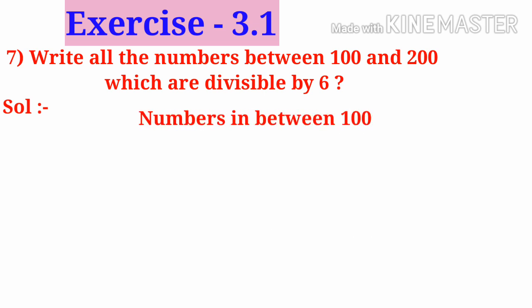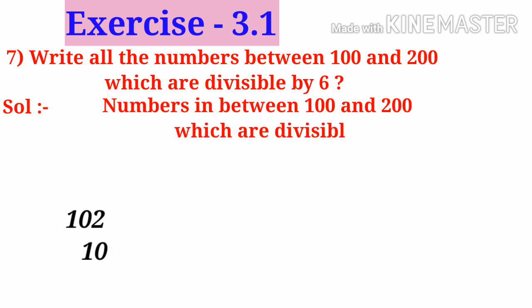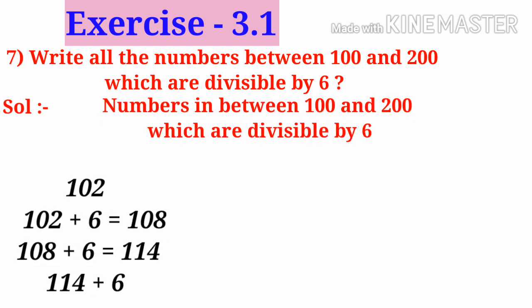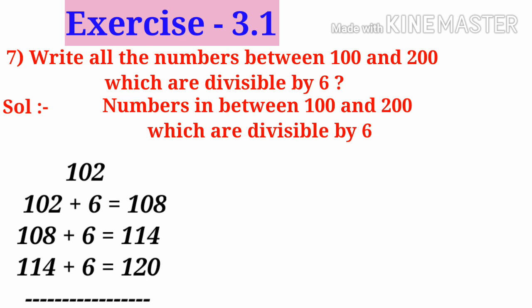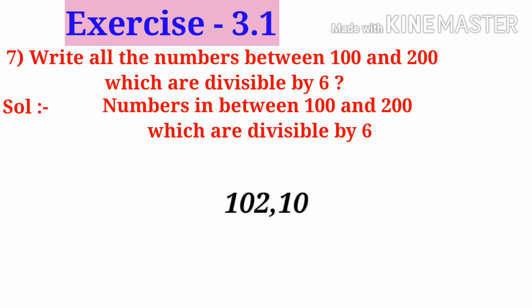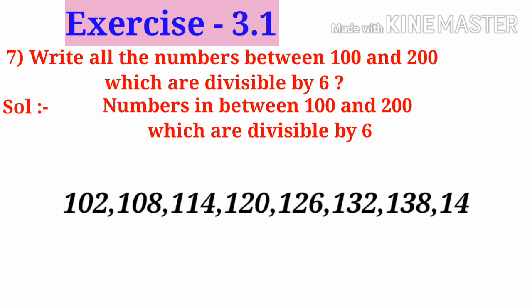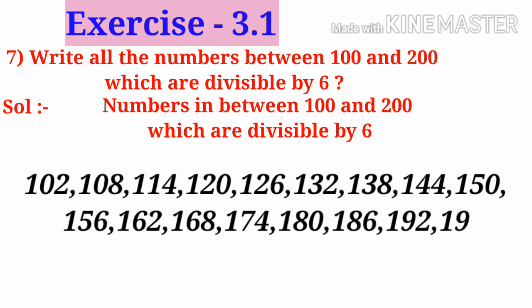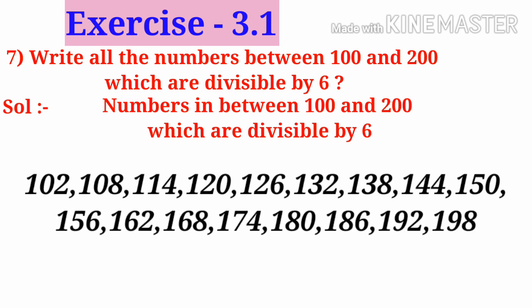Numbers between 100 and 200 divisible by 6 can be found by adding 6 to each previous number starting from 102. The total numbers are: 102, 108, 114, 120, 126, 132, 138, 144, 150, 156, 162, 168, 174, 180, 186, 192, and 198.